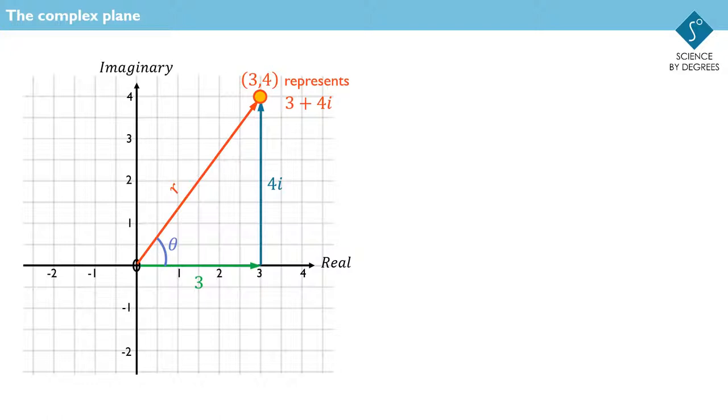Pythagoras' theorem gives us the magnitude of r as the square root of 4 squared plus 3 squared, so r has magnitude 5.